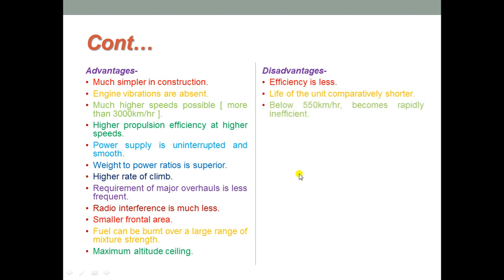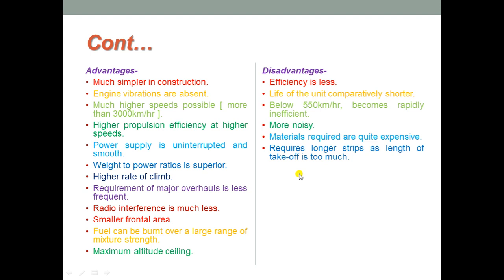Below 550 kilometers per hour, turbojets become rapidly inefficient. They are more noisy in operation, and the materials required are quite expensive. Longer takeoff strips are required, as the distance needed for takeoff is very large. During takeoff, thrust is very low, which is another reason why longer strips are required.